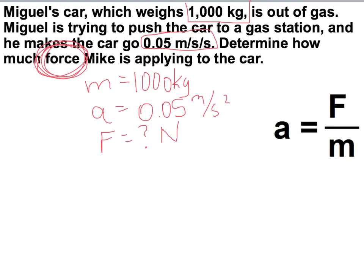So what you can do is you can either rearrange these letters to get force by itself, or you can plug in the numbers. I'm going to go ahead and plug in the numbers. Acceleration is 0.05 meters per second squared. We don't know the force, and mass is given to us as 1,000 kilograms.